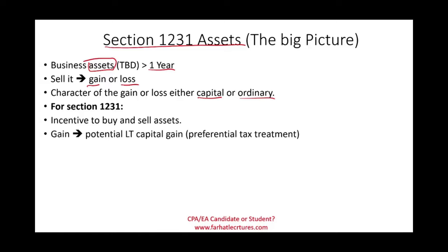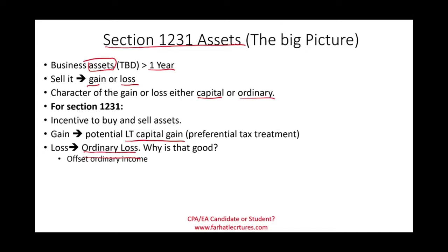If you have a gain on the sale, that gain can potentially be treated as long-term capital gain, which is taxed at a lower, preferential rate. If it's a loss, the loss is treated as an ordinary loss, which offsets ordinary income. Simply put: gains get lower-rate capital treatment, losses fully offset ordinary income.